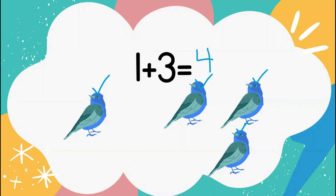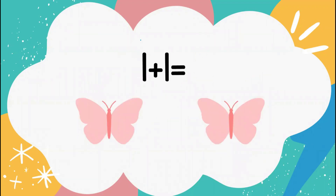Now let's take a look at 1 plus 1 equals. I'm going to give you a minute to try to solve this on your own. 1 plus 1 equals what? Let's count our butterflies: 1, 2. So 1 plus 1 equals 2. Excellent adding.